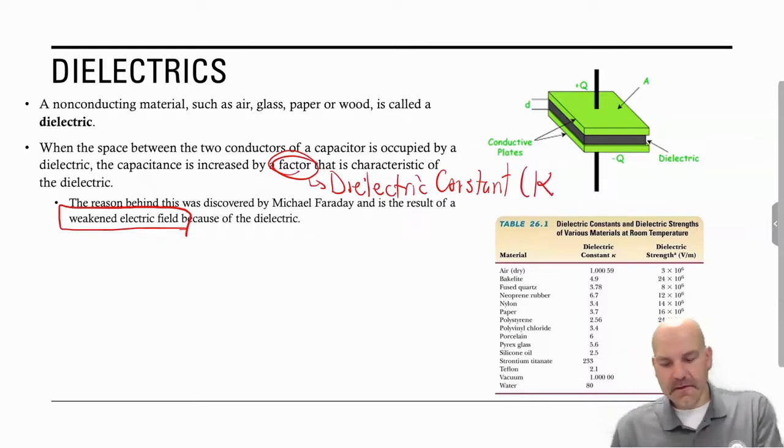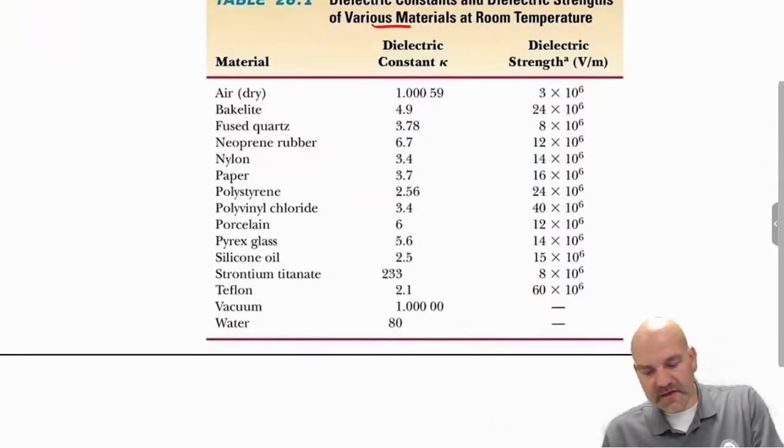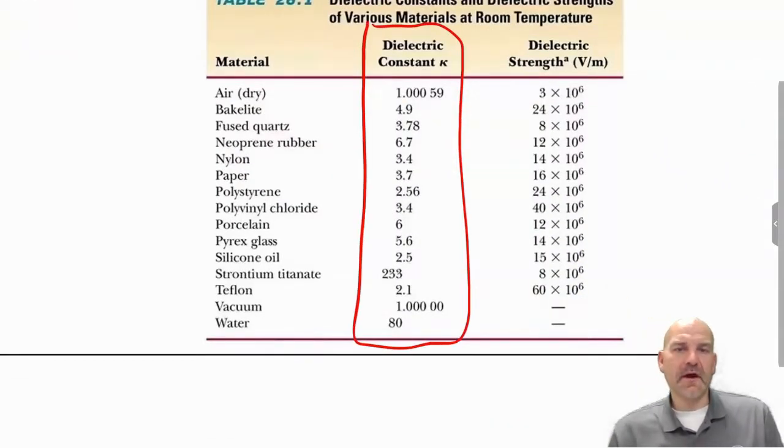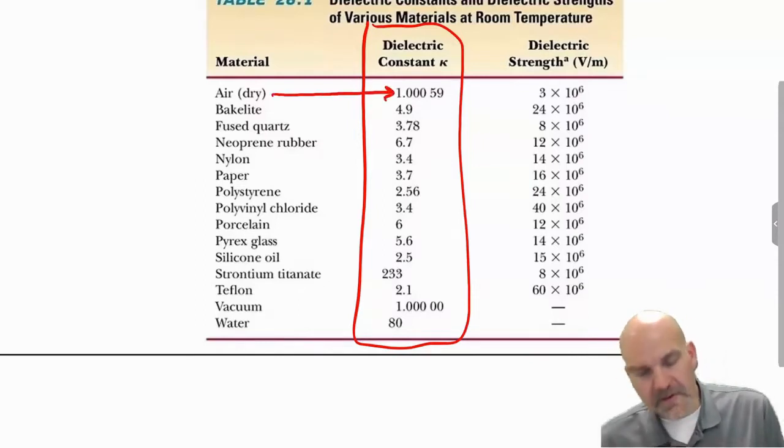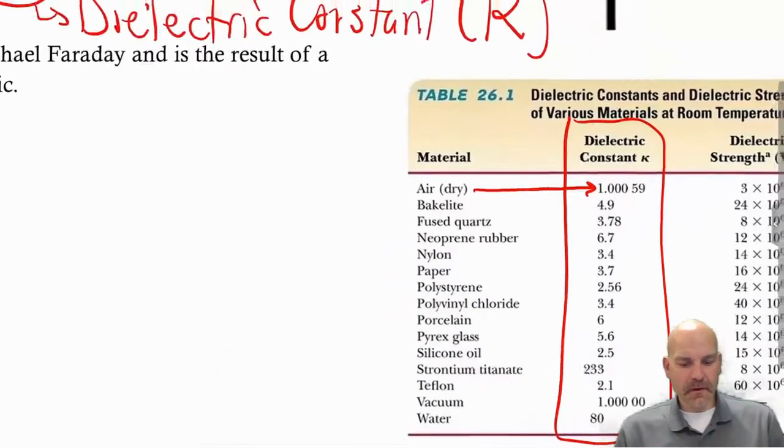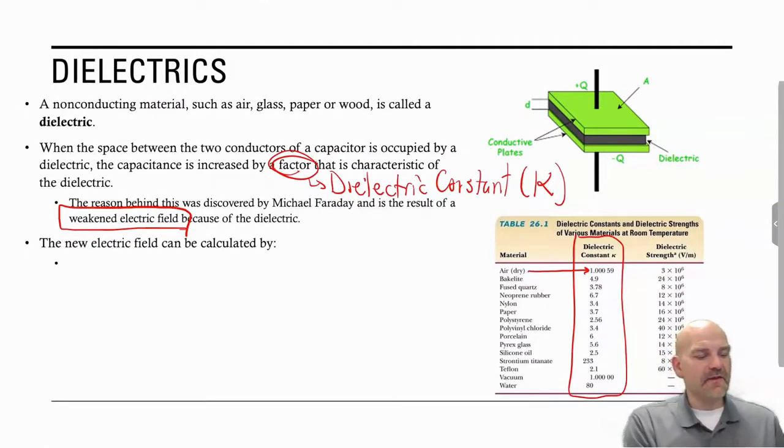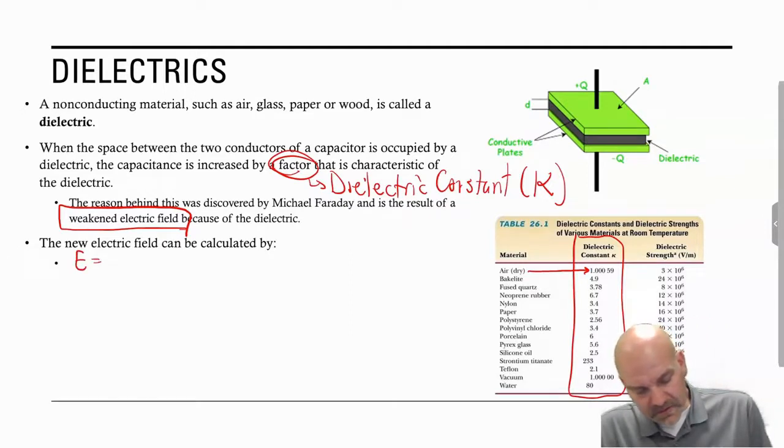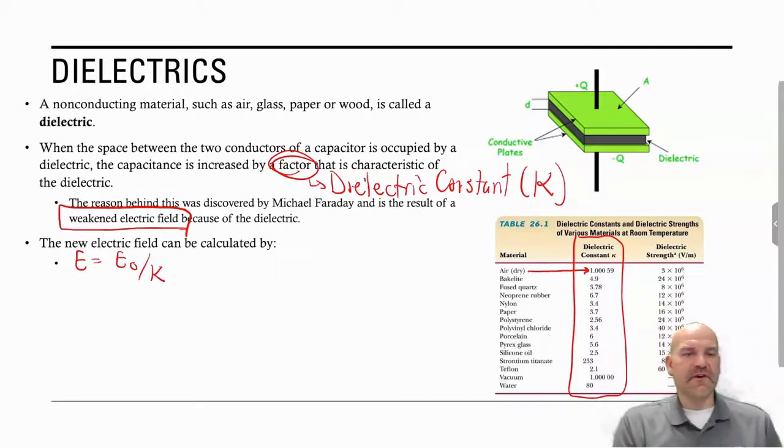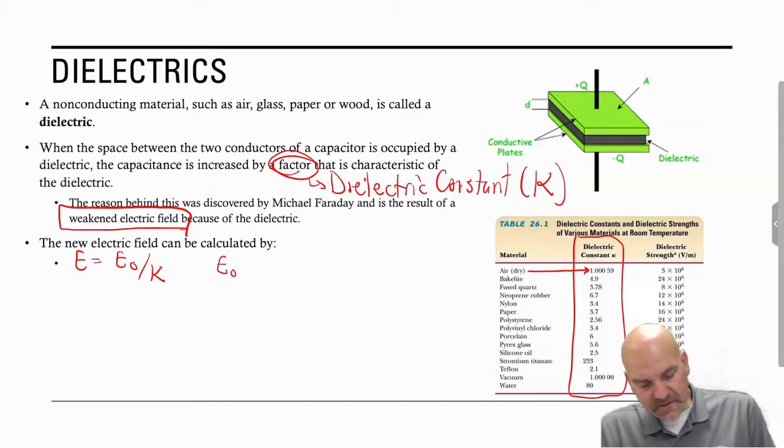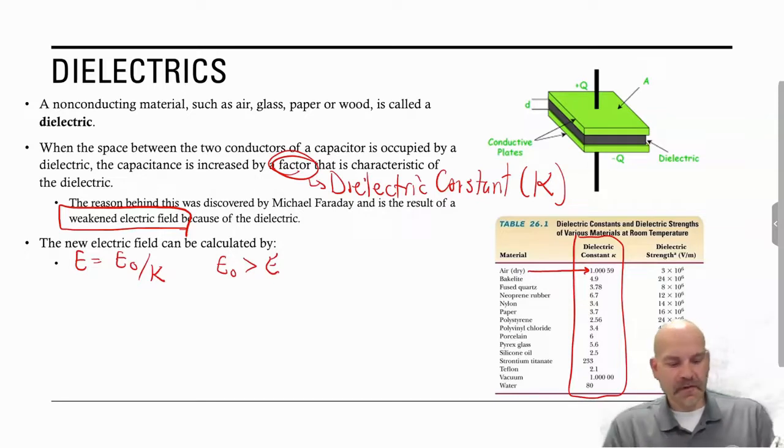The dielectric constant is what we call kappa, which is K. And you can see here in most textbooks, they do have a table very similar, where it does focus on those dielectric constants. Air is approximately 1. With that information knowing that the E field is weakened, we can now calculate the new E field by simply doing this calculation: our initial E field divided by kappa. E zero will always be greater than that new electric field. The dielectric constant is the ratio of the initial E field over the new E field.